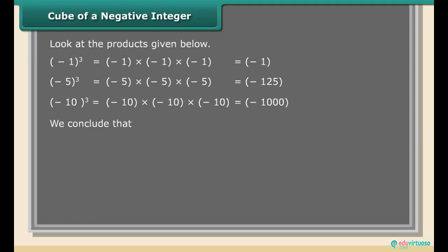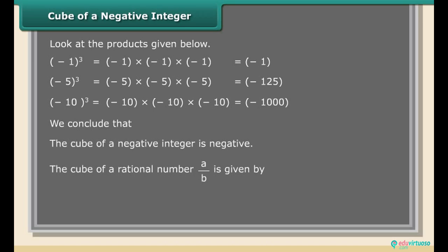The cube of a rational number a/b is given by (a/b)³ = a³/b³.